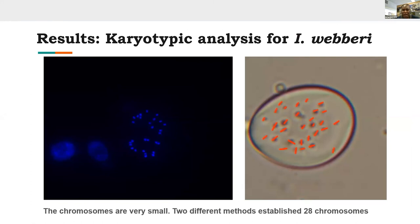From the karyotypic analysis for Ivesia weberi, we confirmed that this species is diploid with 28 chromosomes. We attempted the same for other species within the genus using collected seeds, but unfortunately we could not get the seeds to germinate, and then COVID-19 caused all lab closures in March 2020, suspending that experiment.